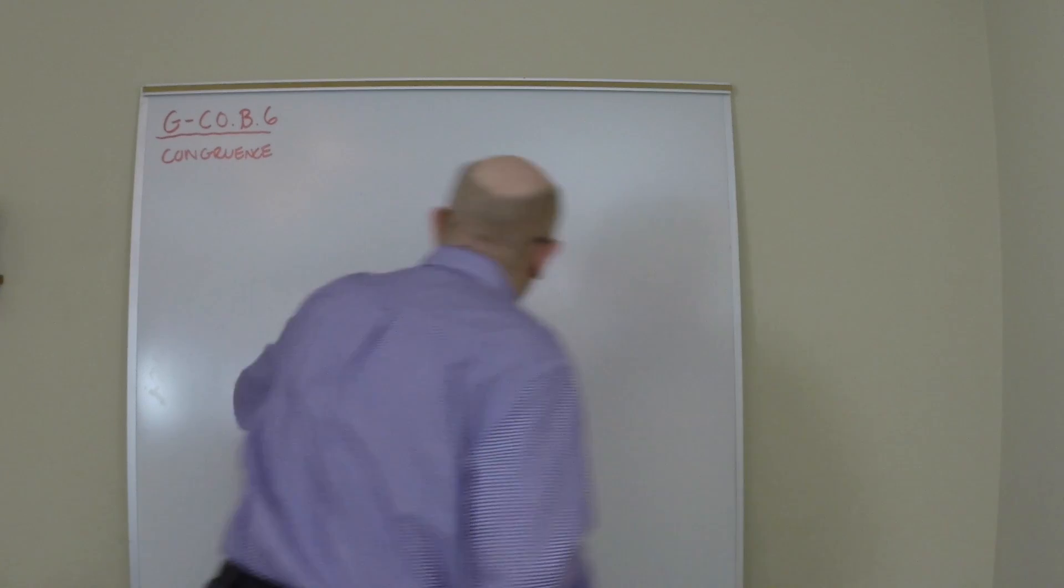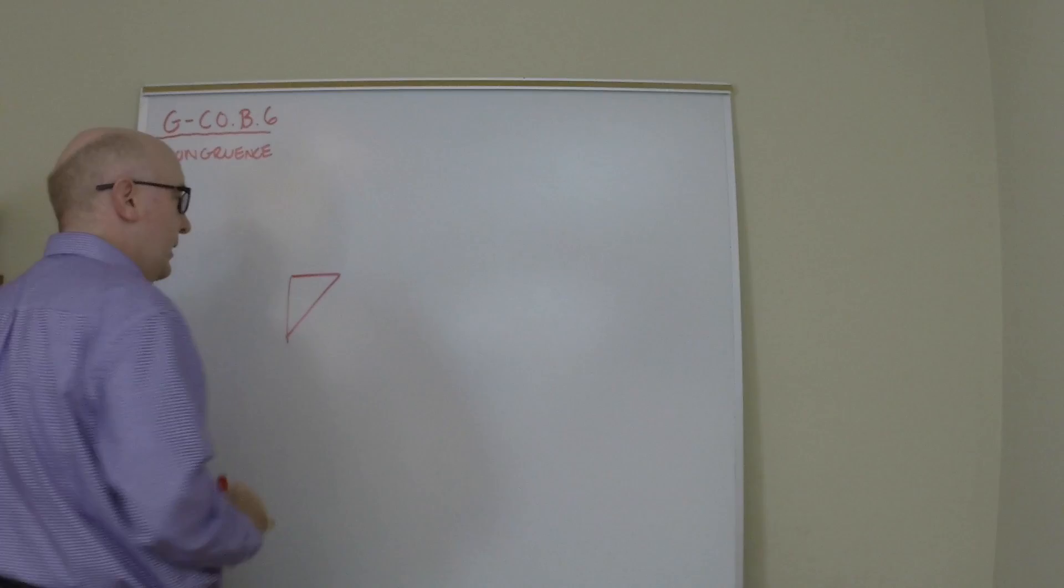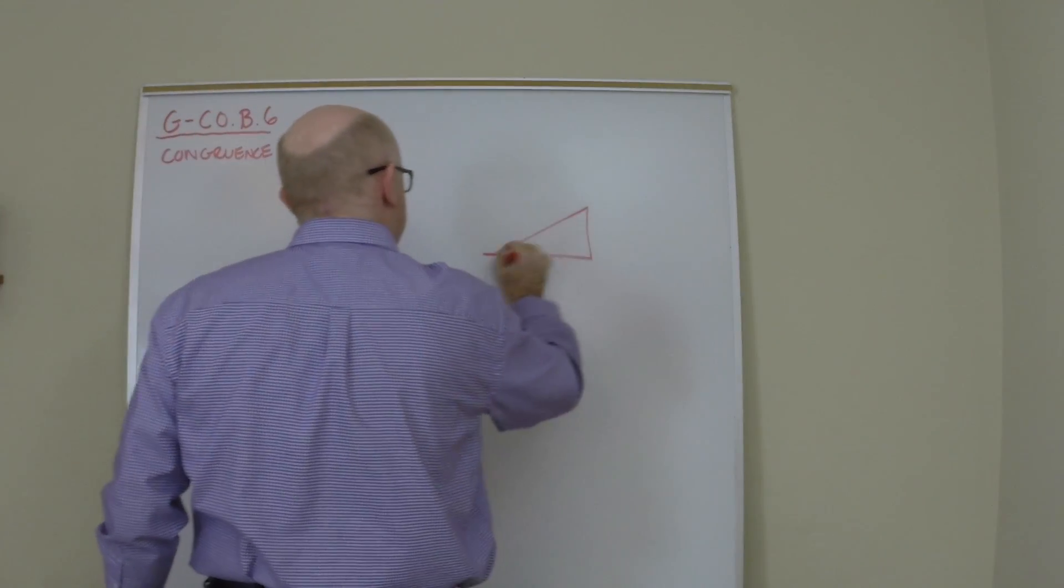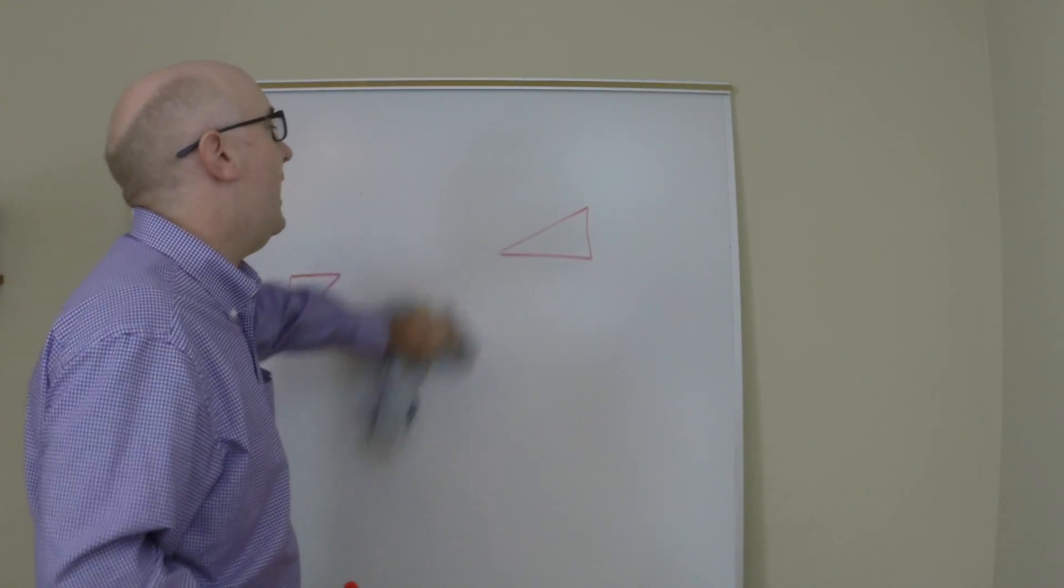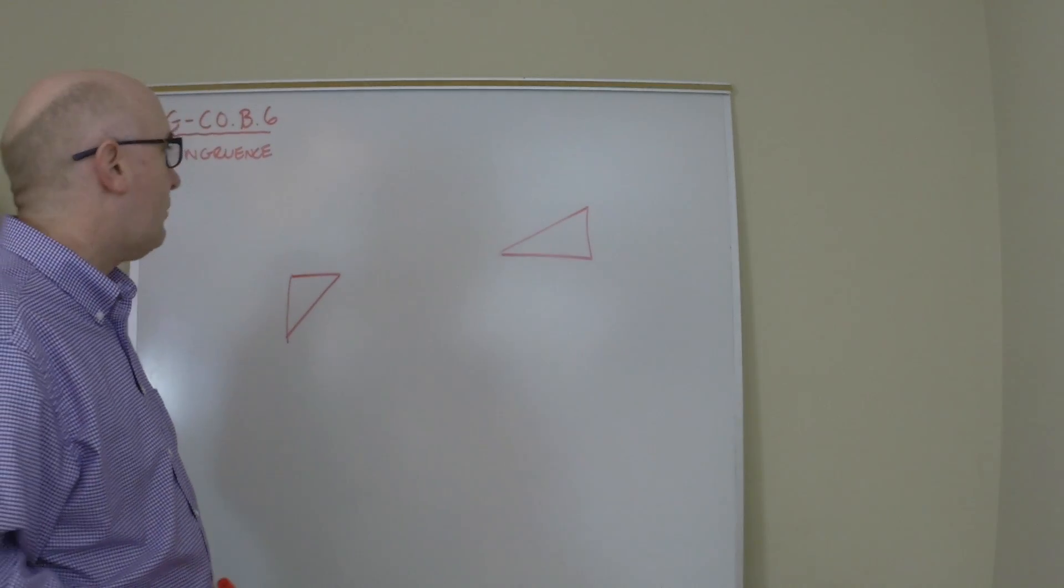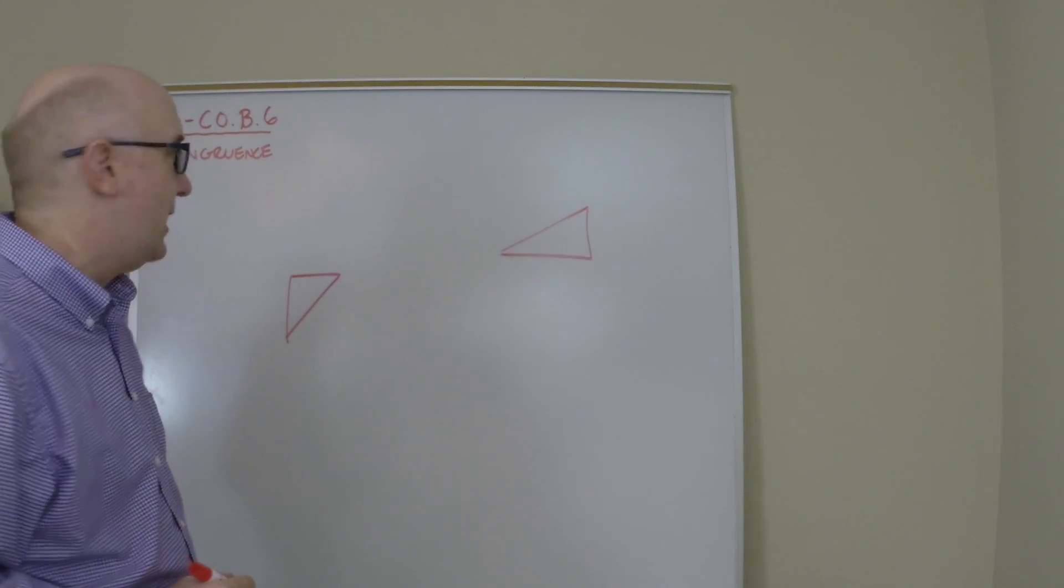And so if I had a triangle here, and then a triangle like this, if I wanted to prove that they were the same, what it might require of me is to do some of those isometric transformations.